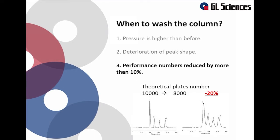The third case is when the theoretical plate number decreased by 10% or more. If the column becomes dirty, noise may increase or the peak shape may deteriorate. As a result, the theoretical plate number will gradually decrease.